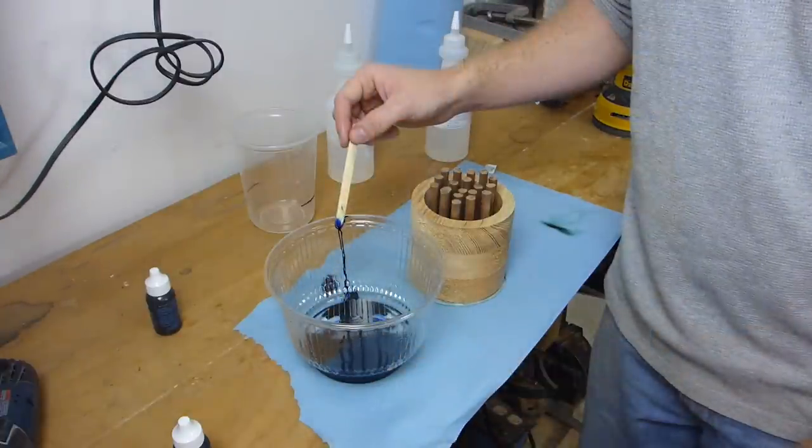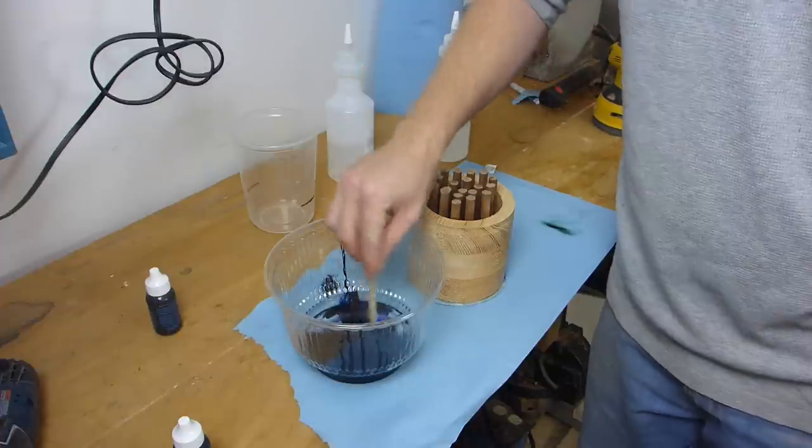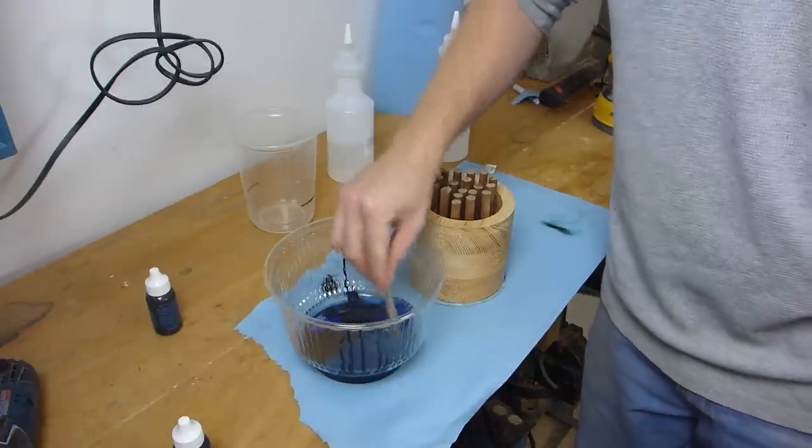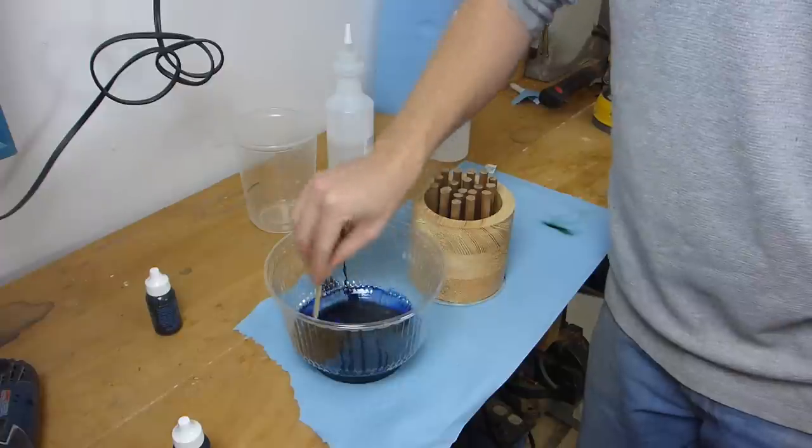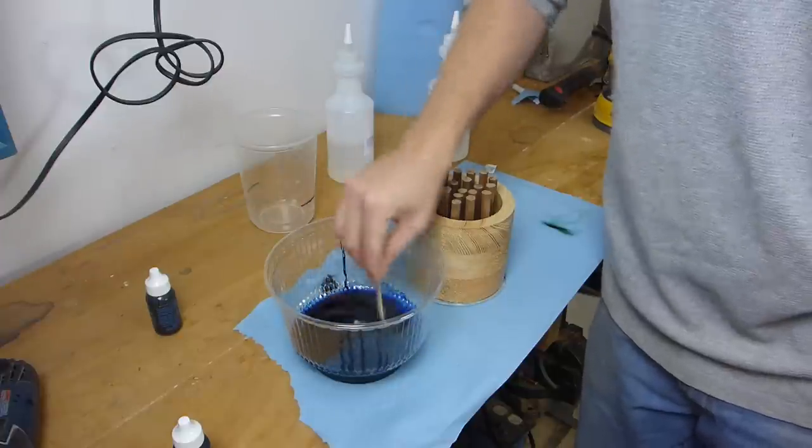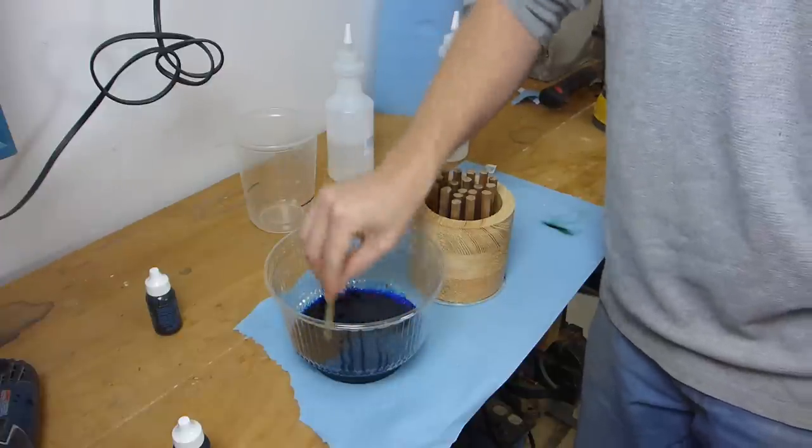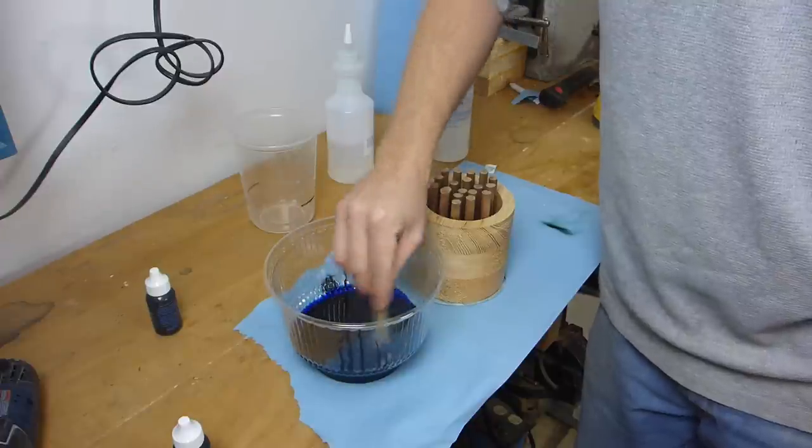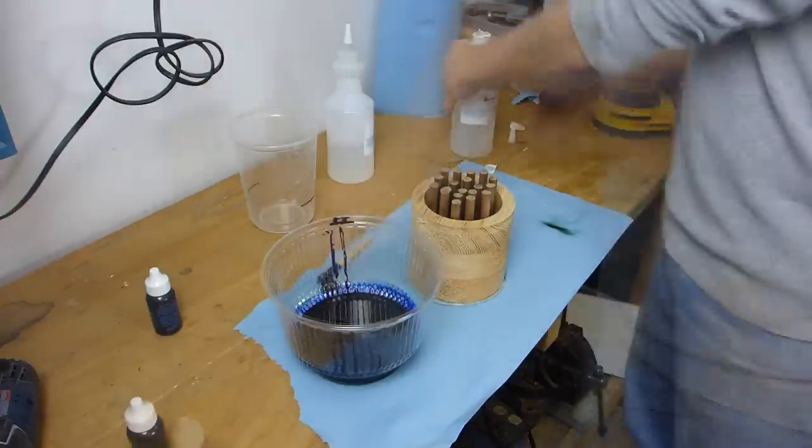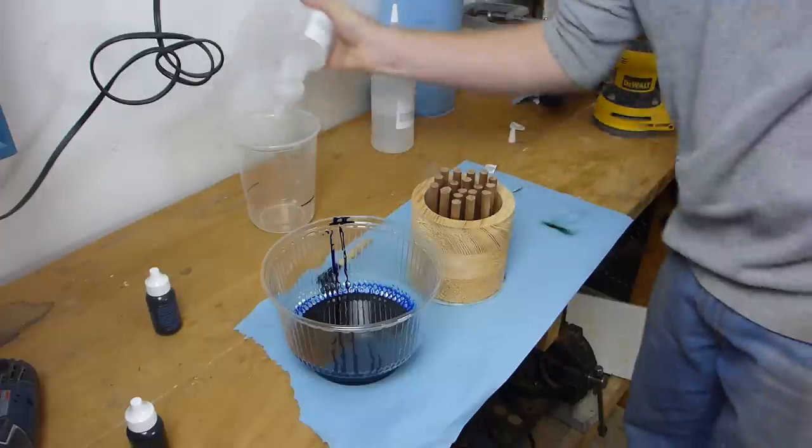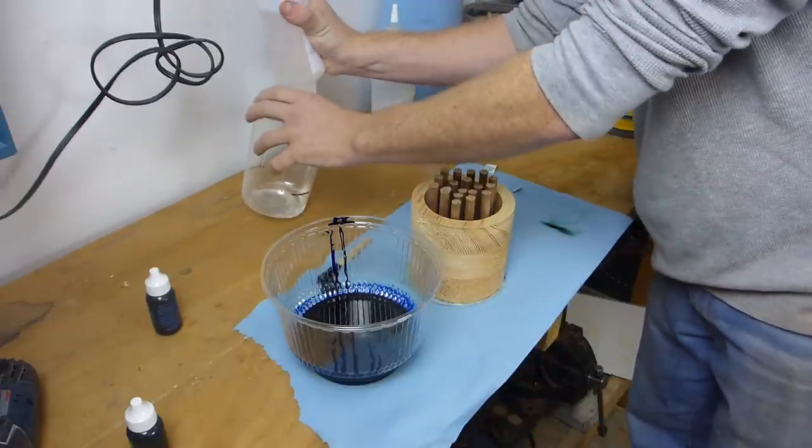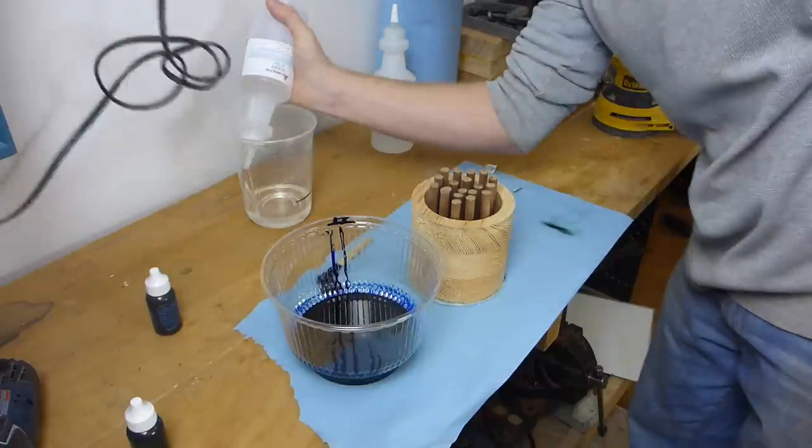My choices were to either throw $20 worth of resin in the trash and start over, or just to remember that this is an experiment and that I'm probably going to make several more mistakes on it before it's over and just use the very, very blue, well pretty much black resin and let it be a lesson learned not to squeeze the bottle so hard next time.